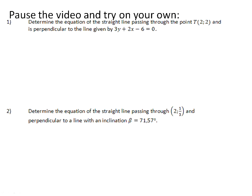Number one, determine the equation of the straight line passing through the point T(2,2) and perpendicular to the line given by 3y + 2x - 6 = 0. So again, we have got a given equation and we are looking to find the equation of a new graph.